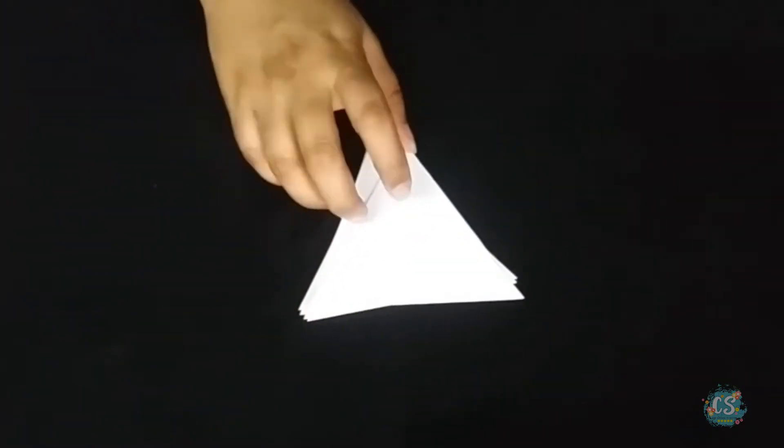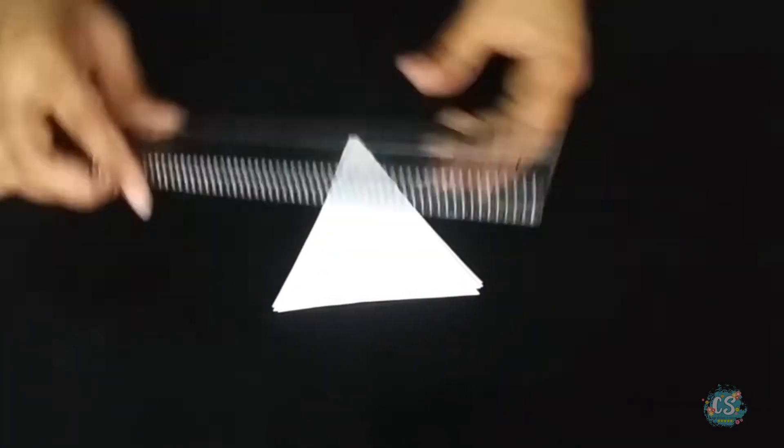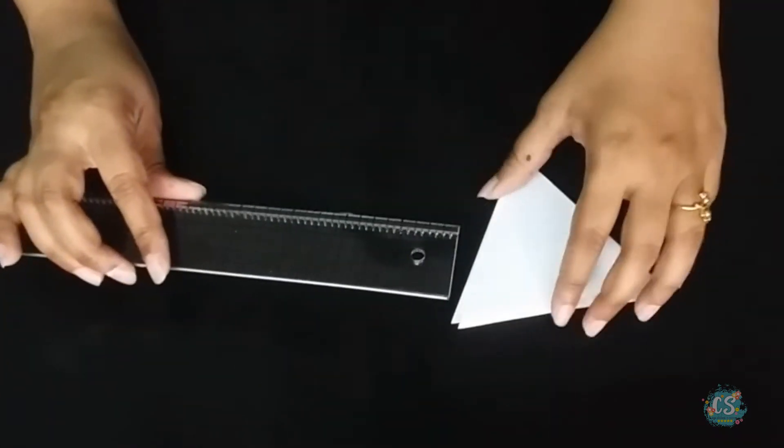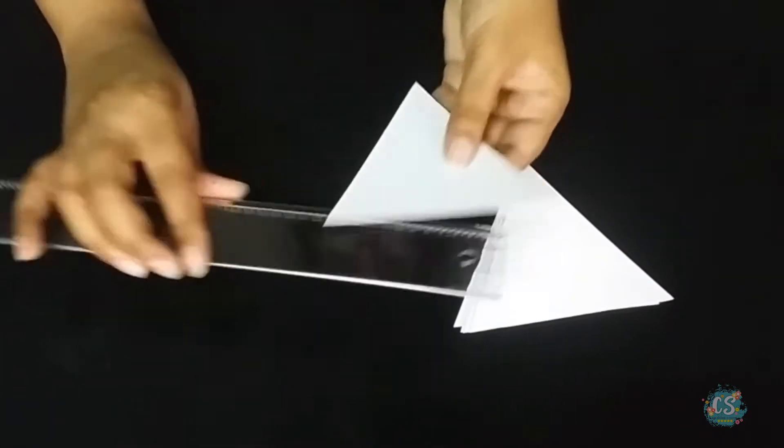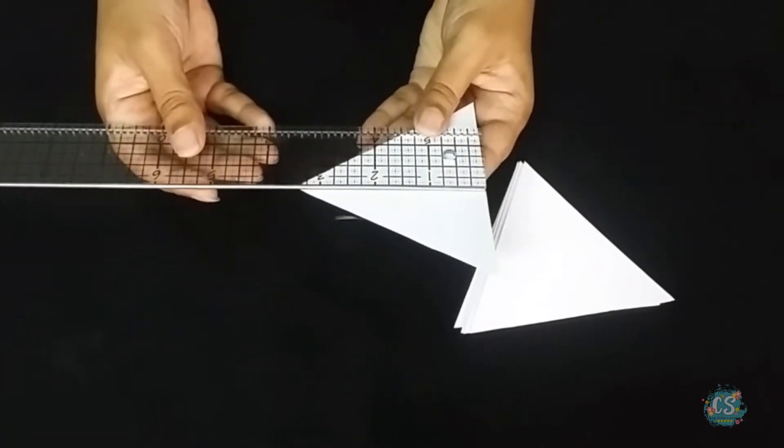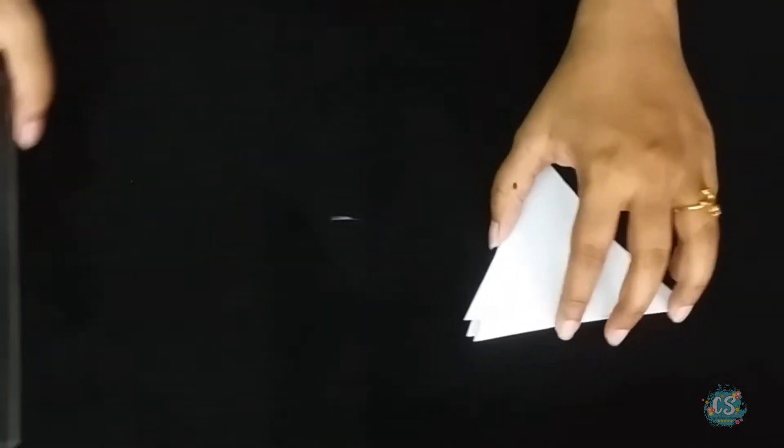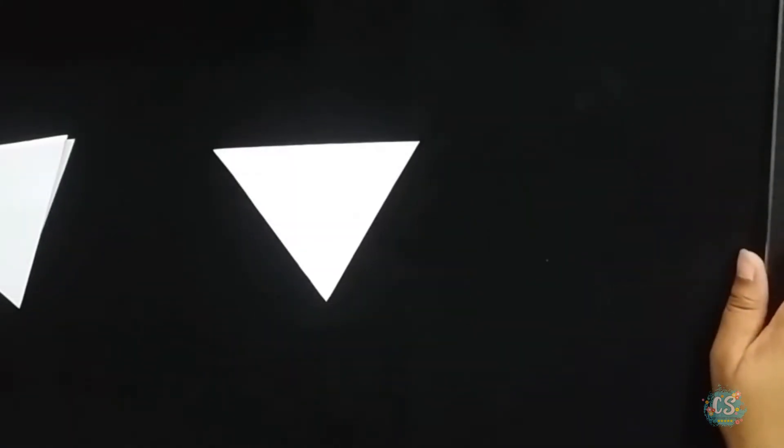So let's begin with the project. I have pre-cut these triangles. They measure about 4 inches in width and 3.5 inches in height. I have just taken a 200 GSM white cardstock and I have cut them up. And I have adjoined two triangles to make it a little sturdy. You can take a thicker cardboard or any other material to do the same.